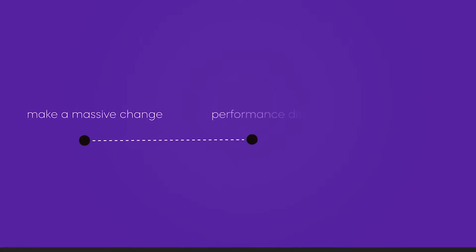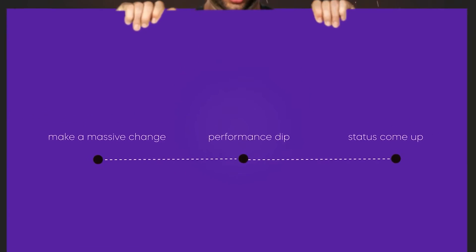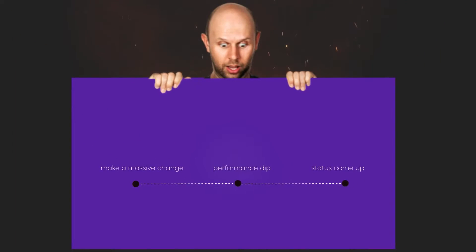A lot of people make a massive change to their account, see performance dip, and see the status come up. They start panicking because performance isn't as good as it used to be and they try to revert back to where it was previously. You don't want to do this — you just want to leave it how it is for the moment and let bid strategy learning pass.